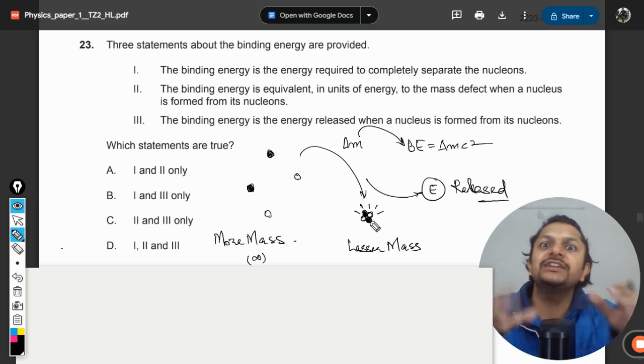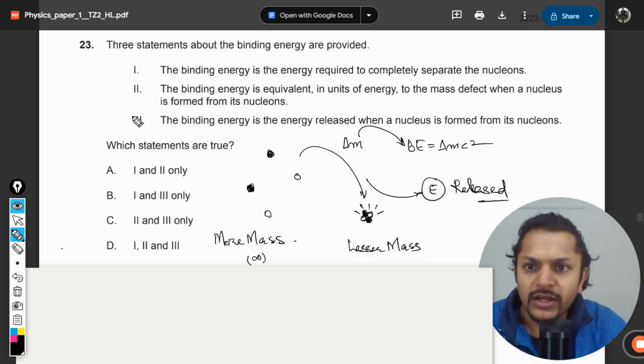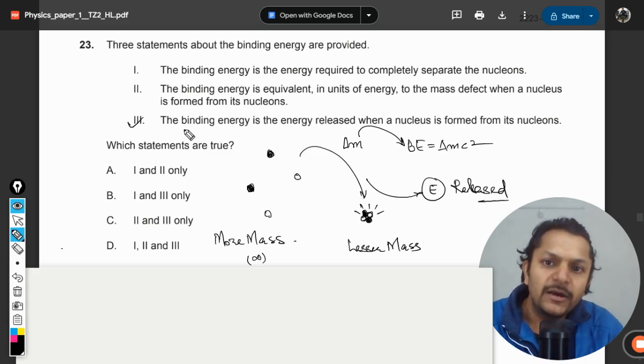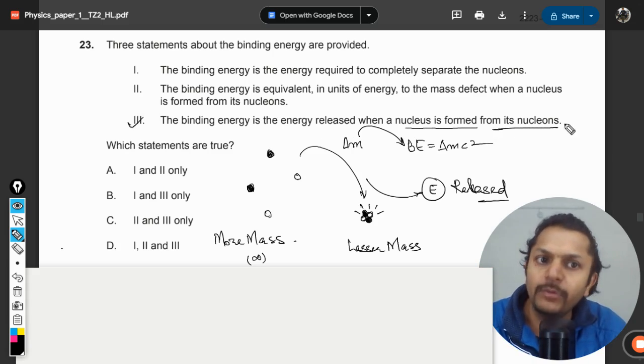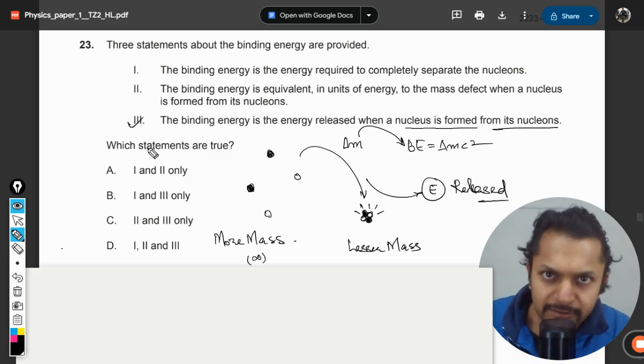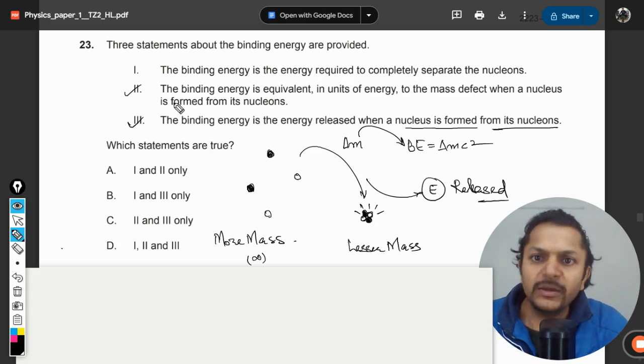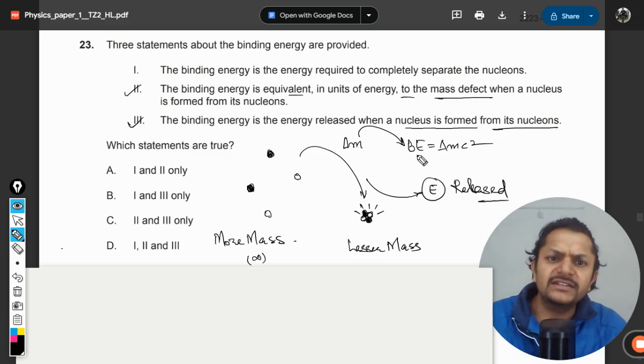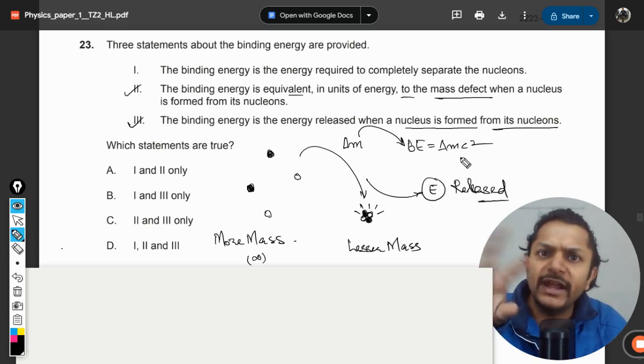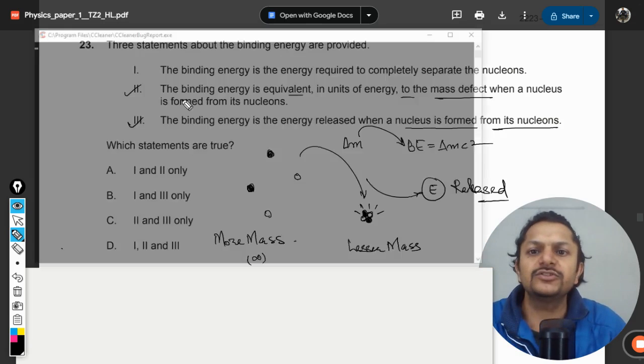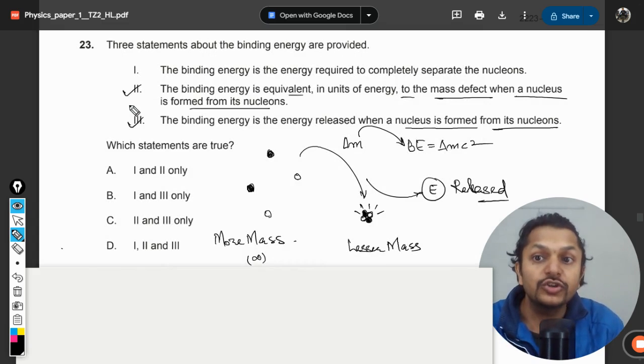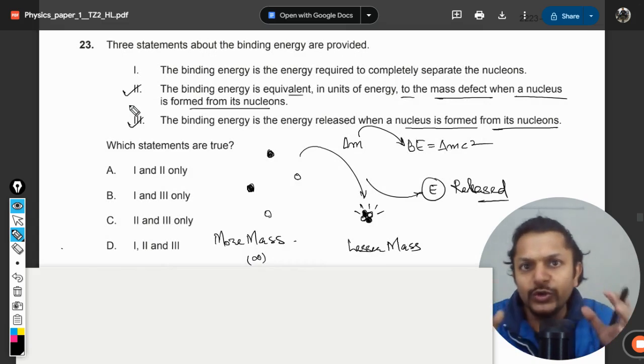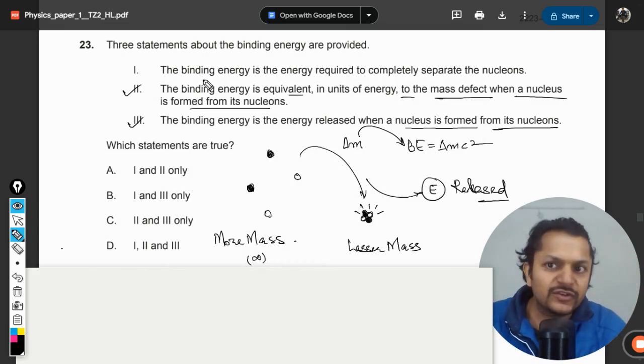Why released? Because mass has vanished. Now these are having more mass, this is having lesser mass, so where is that mass going? Mass is converted into energy. This is the part number one. So point number three is absolutely correct: binding energy is energy released when a nucleus is formed from its nucleons, there is no doubt about it. And point number two, the binding energy is equivalent to the mass defect, even that is correct. Binding energy is equal to delta mc square. So even this is not a problem when a nucleus is formed from its nucleons. So this is also correct. So two is correct and three is correct, absolutely.